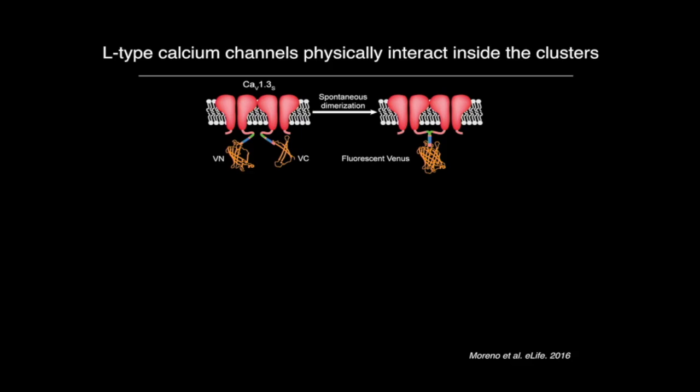In bimolecular fluorescence complementation, you have a fluorescent yellow protein — in this case the Venus protein — split into two non-fluorescent halves. You tag one of these halves to each channel, then express the channels in a heterologous system. If the channels get physically interacting, you have a reconstitution of the fluorescent protein and an increase in fluorescence.